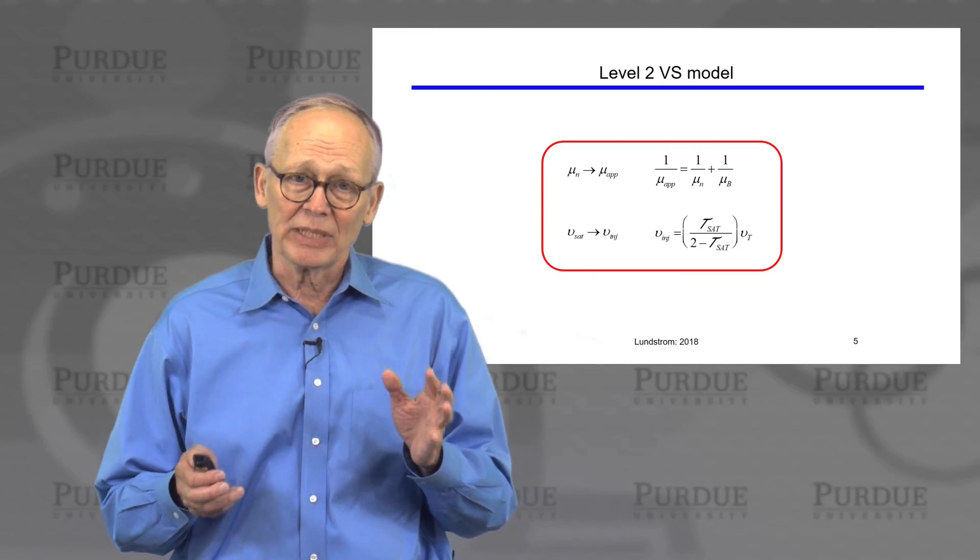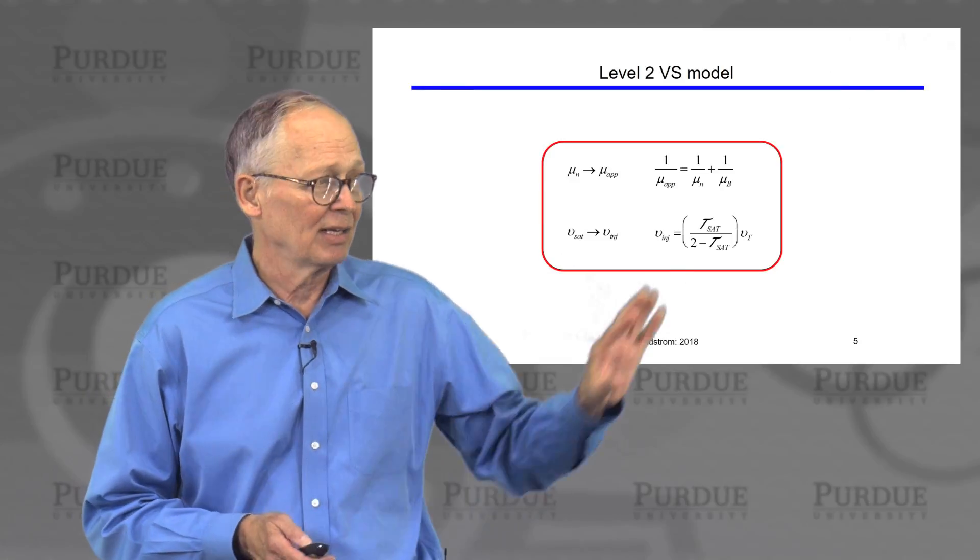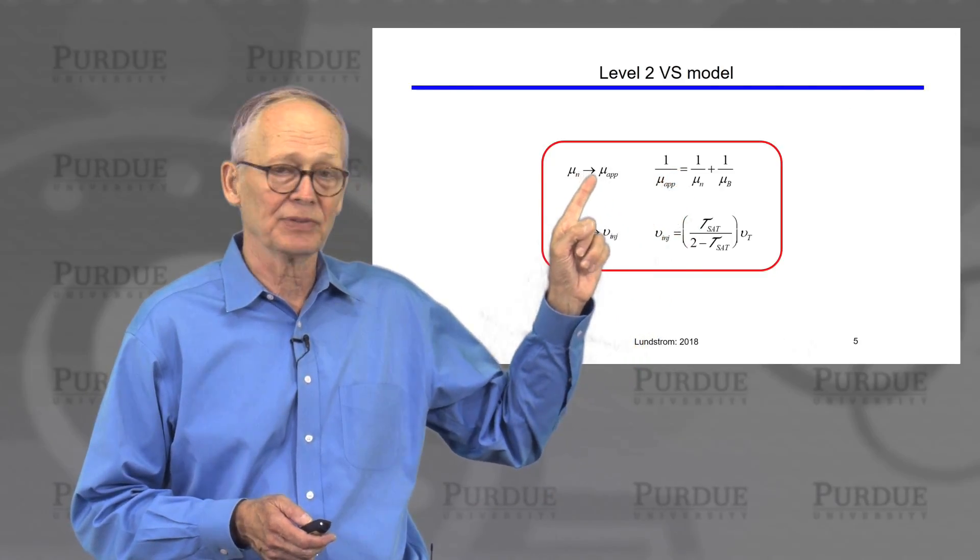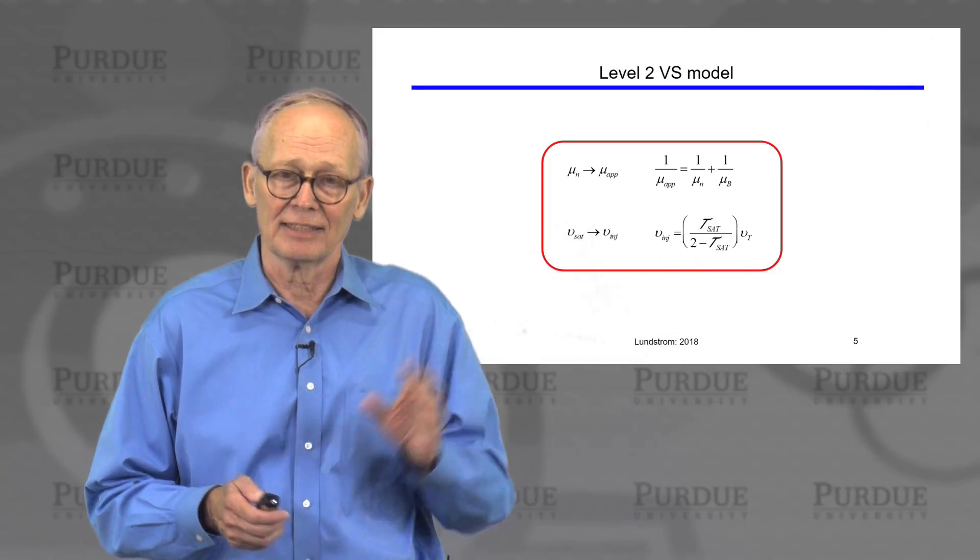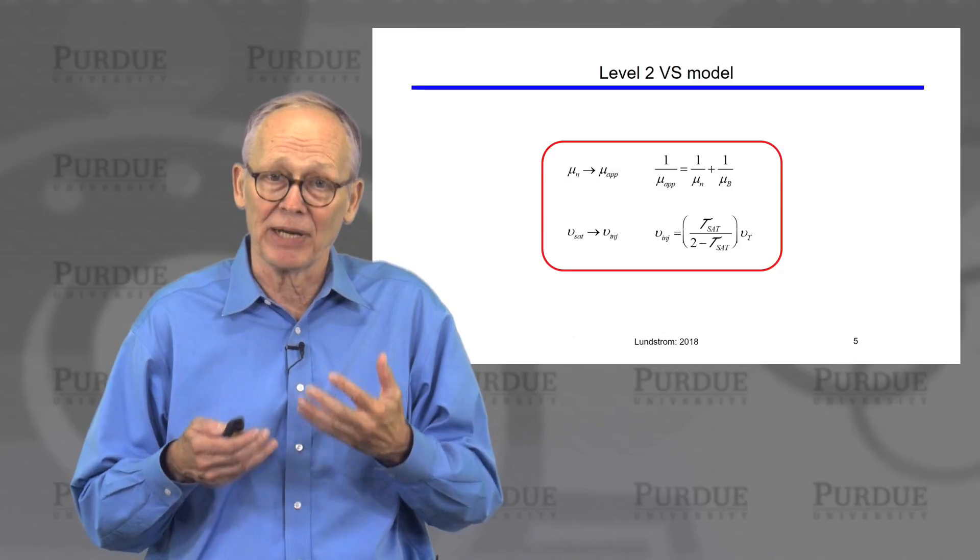So now we can easily take our virtual source model to the next level. And it's very simple. All we need to do is to replace the diffusive mobility by this apparent mobility.